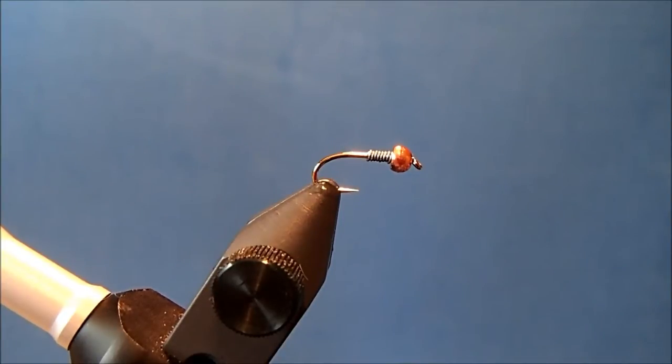I'm going to tie Mercer's Micro Mayfly, starting with a size 16 nymph hook in the vise. I've already added a 3/32nd tungsten bead along with a handful of wraps of lead to give it some extra weight, shape, and to seat that bead.